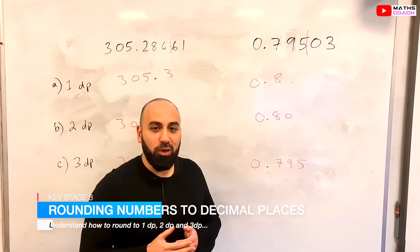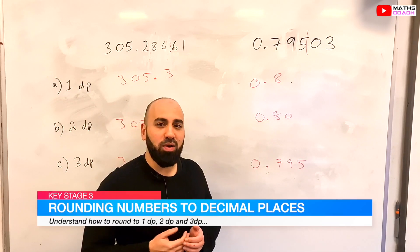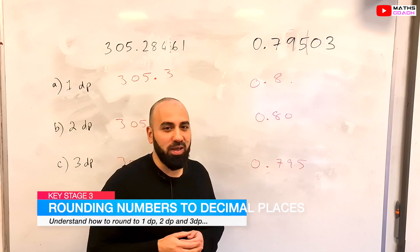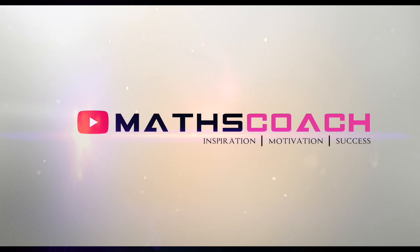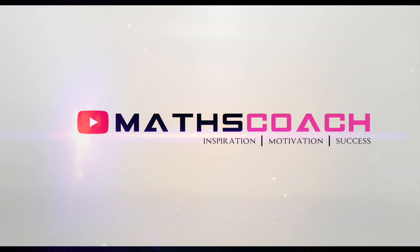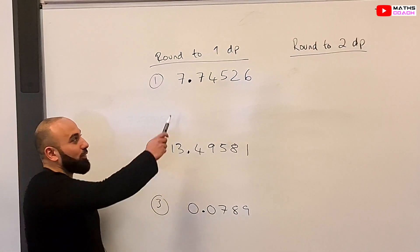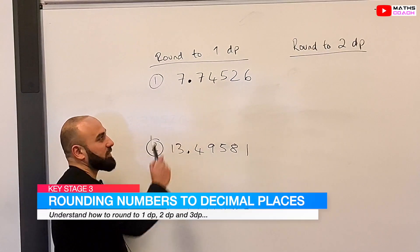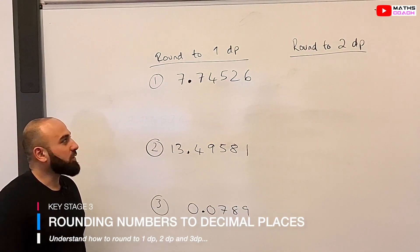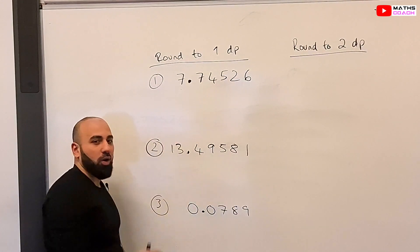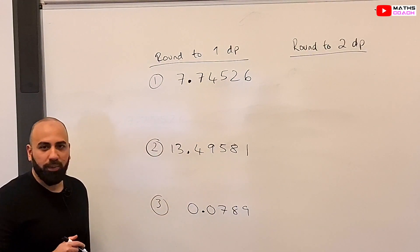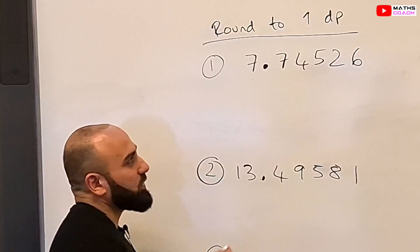Welcome to the lesson where we'll be looking at how to round numbers to decimal places. We're going to look at rounding this number to one decimal place, which means we want to keep only one number after the decimal point. So how do we do this?